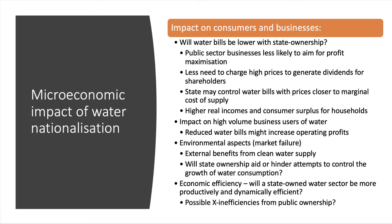If bills come down, that would increase real incomes and consumer surplus for millions of households — say a £100 reduction in water bills per year, an extra £2 per week. It would also have a micro impact on particular businesses, particularly those who use high volumes of water — restaurants, hotels, all kinds of businesses use vast volumes of water. At a micro level you could think about the impact on their operating profits.